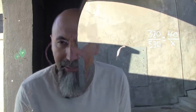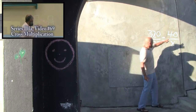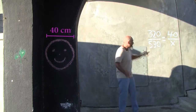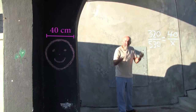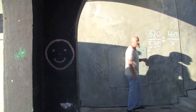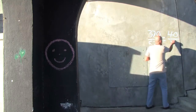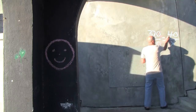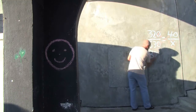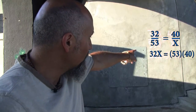Simplify before you start solving, because smaller numbers are easier to deal with. The zeros cancel out, so it's basically 32 divided by 53 equals 40 over X. We grab this, kick it up, and grab this, kick it up here. So what we're going to end up with is 32X equals 53 times 40.